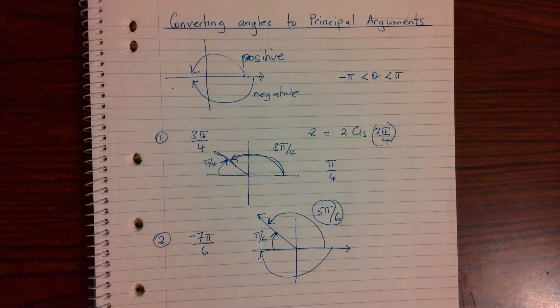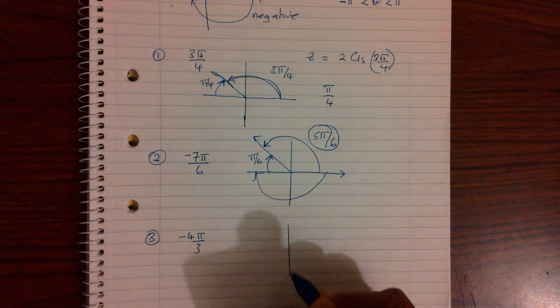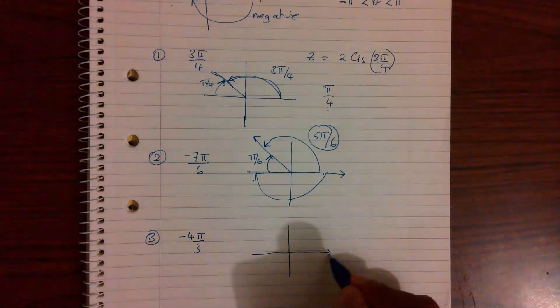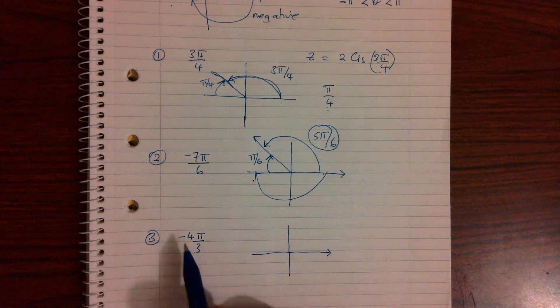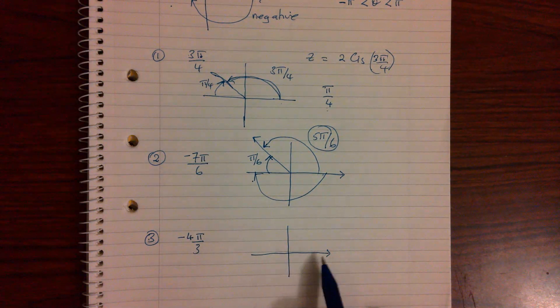We'll do a few more examples. Another one, which is say negative 4π over 3. I'm going to be doing it the same way. Drop my quadrants. That is your positive x-axis. It's negative. So I'm thinking about my clockwise direction here.